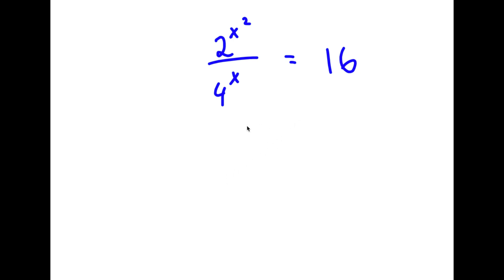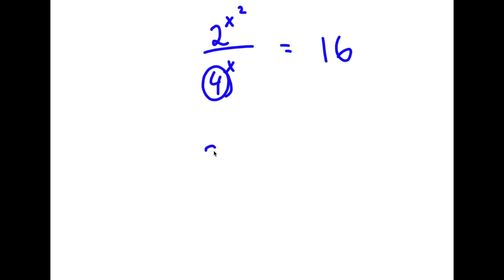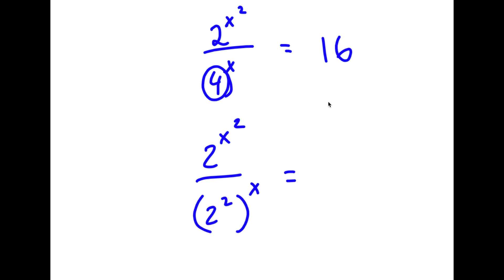In this problem I have 2 to the power of x squared over 4 to the power of x is equal to 16. So what I'm first going to do is rewrite 4 as 2 squared. So now I have 2 to the power of x squared over 2 squared to the power of x is equal to 16, which I'm going to rewrite as 2 to the power of 4.